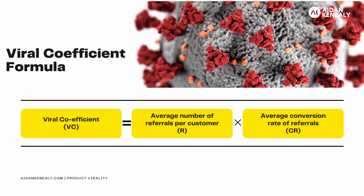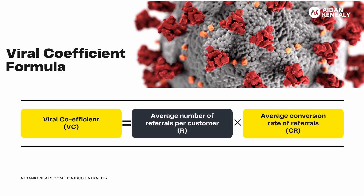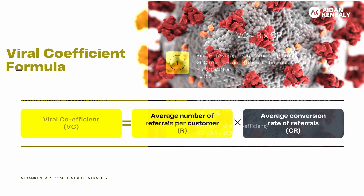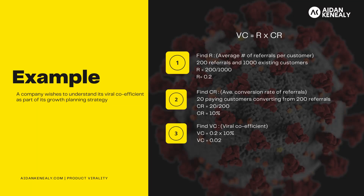VC equals R times CR, where R is the average referrals per customer, and CR is the average conversion rate of referrals. To make sense of this equation, it pays to look at an example. So let's say we have a company that's looking to understand its viral coefficient as part of its growth planning strategy.